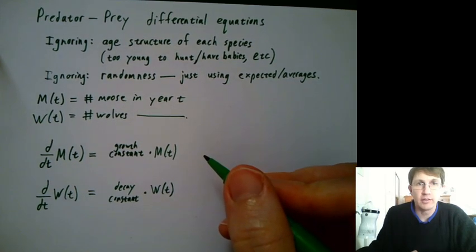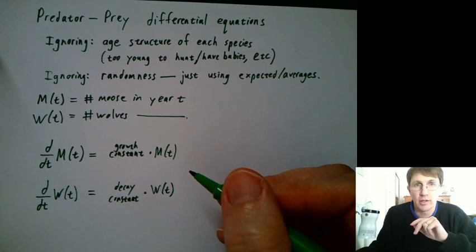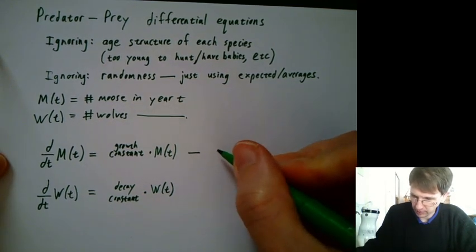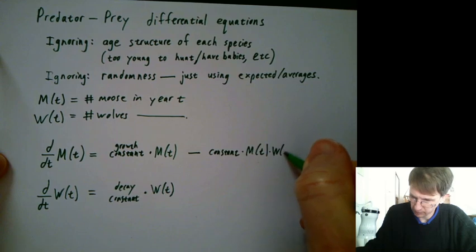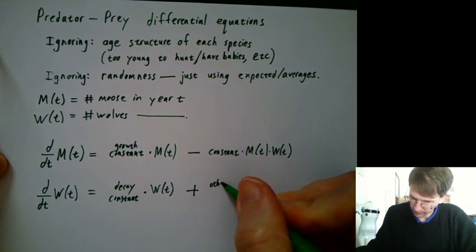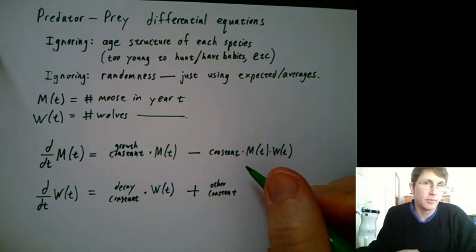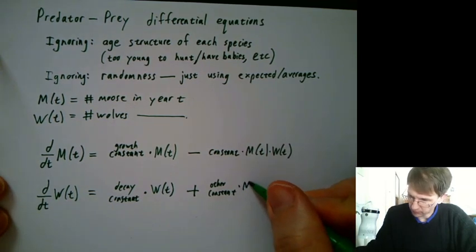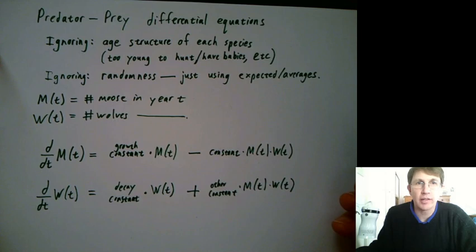Now let's think about moose-wolf interactions. We said the number of interactions is proportional to the number of moose and the number of wolves, so to their product. Are moose-wolf interactions good or bad for a moose? Pretty bad, I'd say. So we'd have a negative here and some constant times the number of moose times the number of wolves. Moose-wolf interactions are good for the wolves. So we'll have a plus here and some other constant. These constants depend on things like how good wolves are at catching moose, how nutritious a moose is to the wolves to help it have little baby wolves.